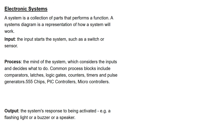Moving on to electronic systems. A system is a collection of parts that performs a function. A system's diagram is a representation of how a system will work. Generally, what you have is an input, a process, and an output.